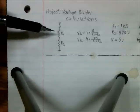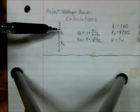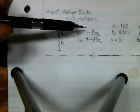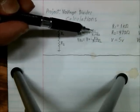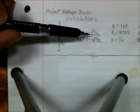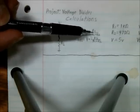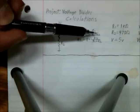And the way to calculate the voltage across R1 is V, which is the voltage, times R1's value of resistance over the sum of R1 plus R2.